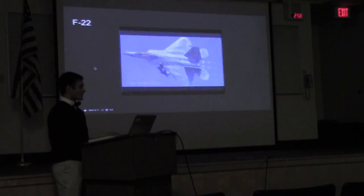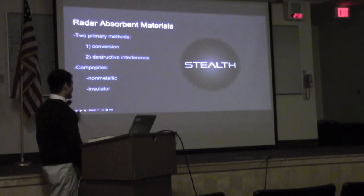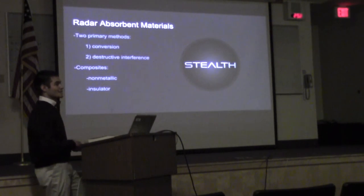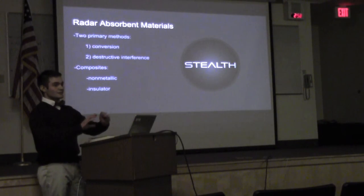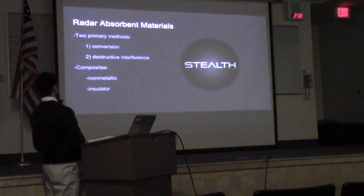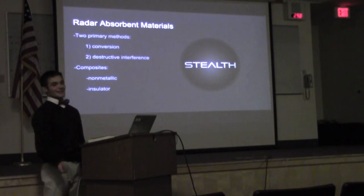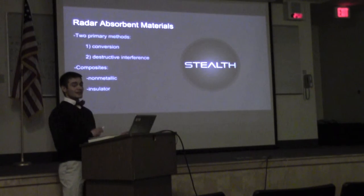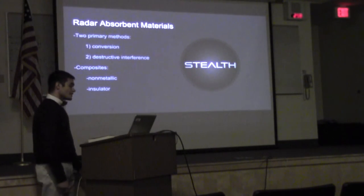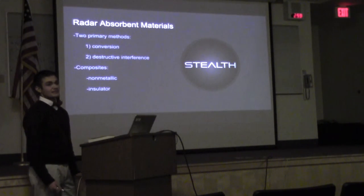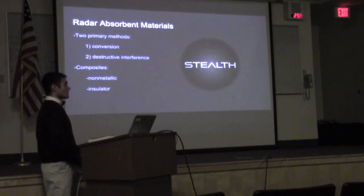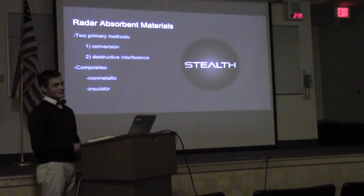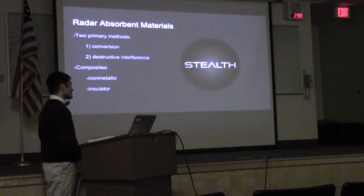Now let's move on to radar-absorbent materials. I want you to think of a cake: the airframe is the cake — it's the foundation. Without the airframe, you don't have a cake, and you don't have an airplane either. These radar-absorbent materials are sort of like the frosting — it makes the cake that much better. RAM works in two primary methods: conversion — converting the radar energy to other forms such as heat — and destructive interference, which means simply canceling the radar out. Composites are also very useful because they're non-metallic, meaning they have poor reflective capabilities so they don't reflect radar, and they can also absorb.